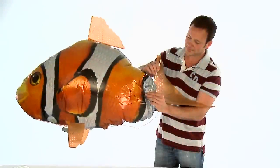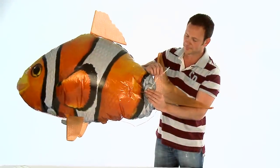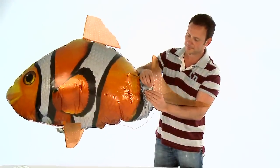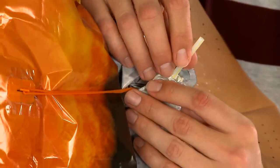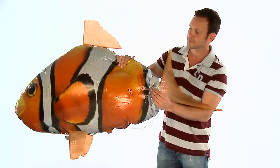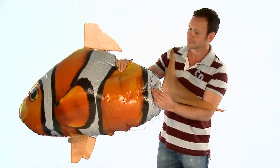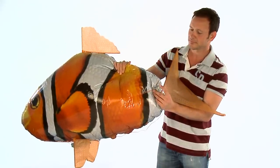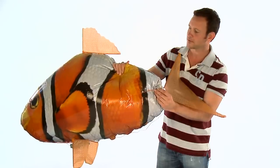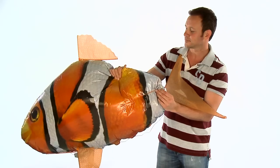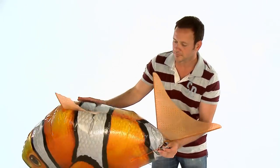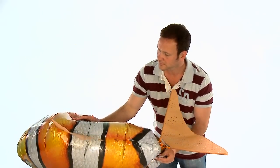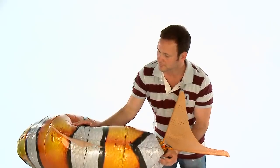To deflate your Airswimmer for storage, you will need to use a thin drinking straw like this one. Slide the straw into the valve of your Airswimmer and slowly press on the balloon until empty of helium. You can place a blanket over your Airswimmer to apply gentle pressure. Deflating may take several minutes to complete fully. When all the helium has been removed, fold the balloon carefully for storage. Do not inhale any of the helium during this process.